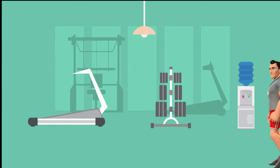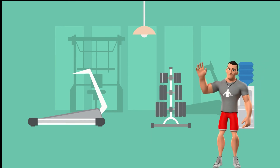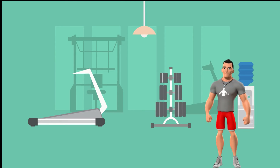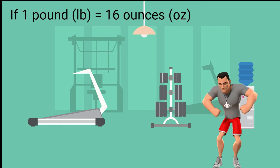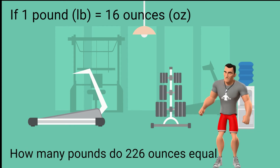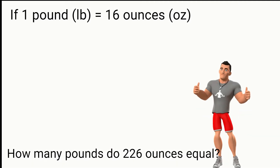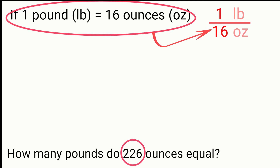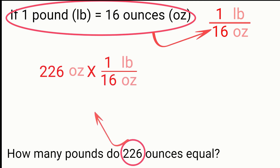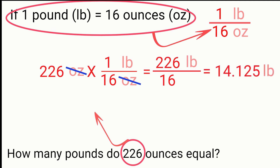Here we have Adam — he is a fitness coach and he wants to know how to convert between a pound and an ounce. If we know that one pound equals 16 ounces, then how many pounds do 226 ounces equal? The answer is 14.125 pounds. The conversion factor is 1 over 16, then we take 226 and multiply it by 1 over 16. So 226 ounces equals 14.125 pounds.